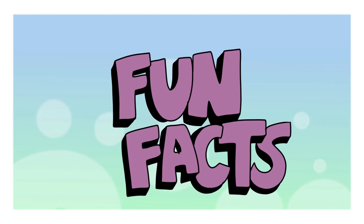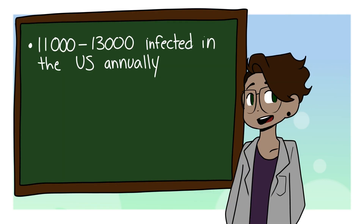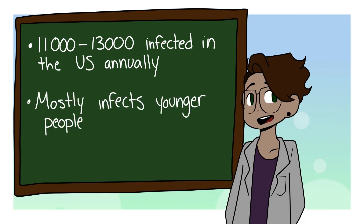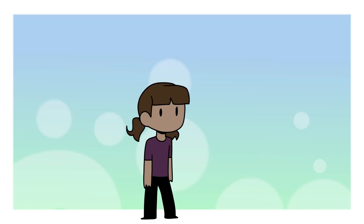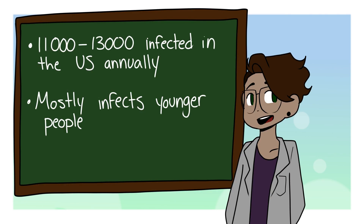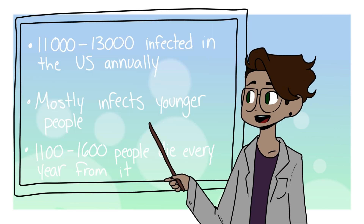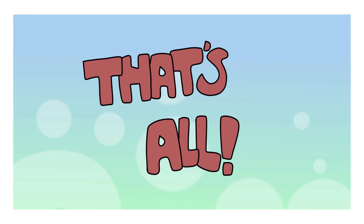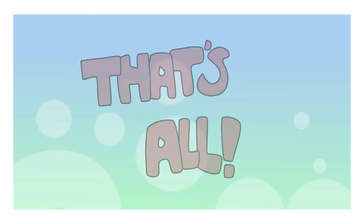Now for some interesting facts. In the United States, it is estimated that 11,000 to 13,000 people are infected with strep throat. Strep throat mostly affects young kids and teenagers, not usually older people. And every year, between 1,100 and 1,600 people die from this. That's all on the streptococcus pathogen — hope you enjoyed, and bye.